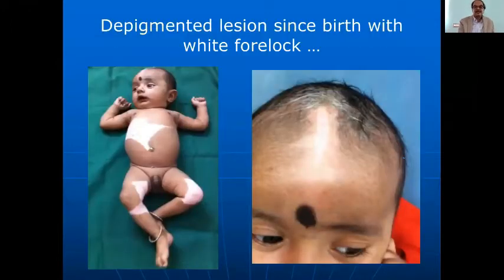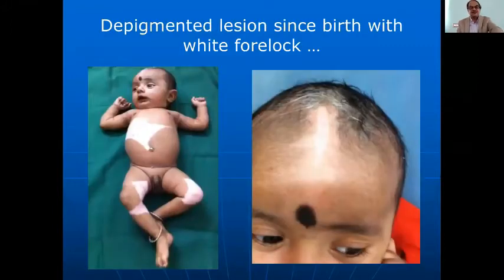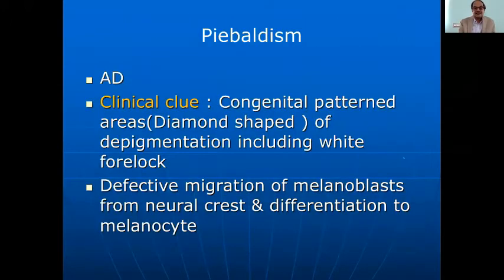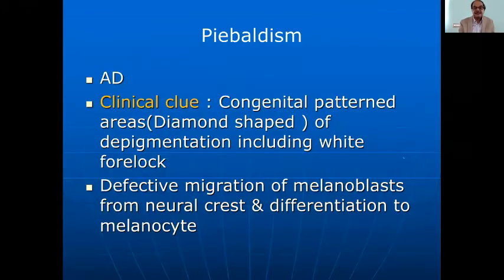Sometimes you may find a child with a depigmented lesion since birth with a white forelock — the diagnosis is piebaldism. The clinical clue is a congenital pattern with almost diamond-shaped depigmented lesions, white forelock, and pigmented skin islands within the depigmented area.